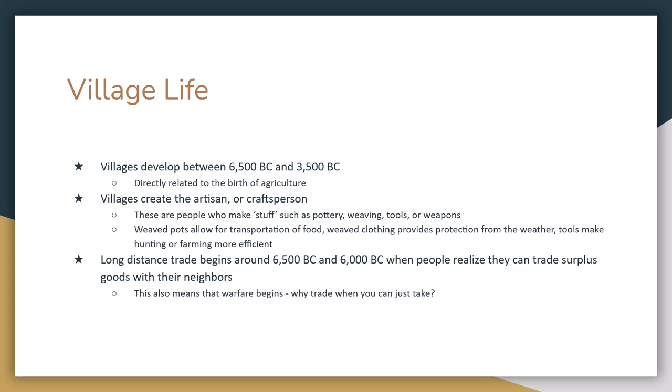Along with the rise of agriculture, you get the development of villages. Once people don't need to move around anymore and can settle in one place, villages start to form, creating the idea of the artisan or craft worker. You soon have specialists who make pottery, tools, weapons, and clothes. Woven pots become extremely important to store and transport food, woven clothing provides protection from the elements, and tools make farming, hunting, and warfare easier.